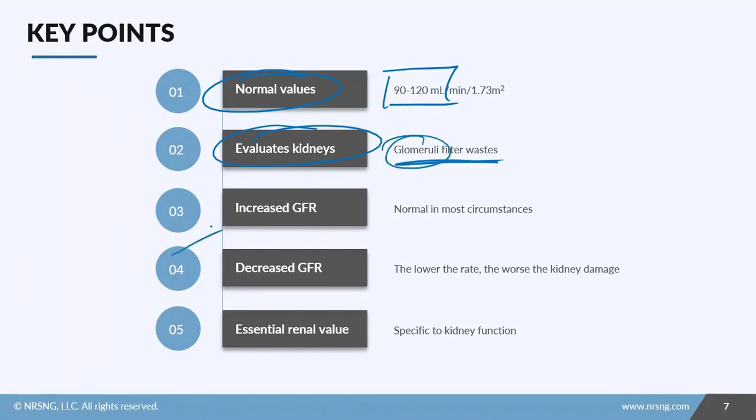Increased GFR: normal in most circumstances. Occasionally, very rare cases where you actually have the decrease in the albumin, so take a look at your albumin if you notice your GFR is pretty high. Decreased GFR is going to help you evaluate how well your kidneys are functioning. The lower the rate, the worse the kidney damage. And it is an essential renal value, is specific to kidney function. Just like with your BUN and creatinine, you need to take a look at your kidneys when you see this value show up.